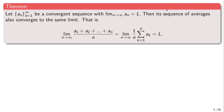Now let's prove this intuitive theorem that says that whenever we have a convergent sequence which converges to some limit L, then its sequence of averages would also converge, and would converge to the same limit.